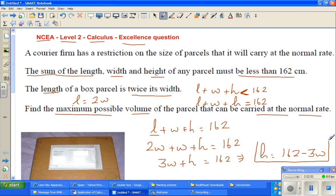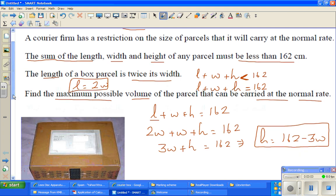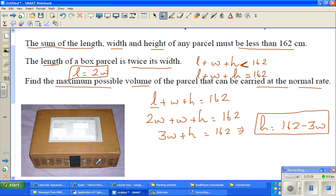I have expressed H, the height, in terms of width W. We've already got L in terms of W, so I'm going to write volume with respect to W. This is a box, I googled this. This is the courier box. This is the length, this is the width, and this is the height. The courier box length has to be twice its width.